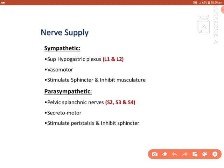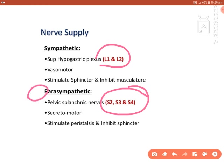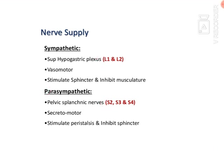Nerve supply: sympathetic innervation is from L1 and L2; parasympathetic innervation is from S2, S3, and S4 through the pelvic splanchnic nerves. The feeling of distension and fullness passes through the parasympathetic pathway, while pain sensations pass through both sympathetic and parasympathetic pathways.